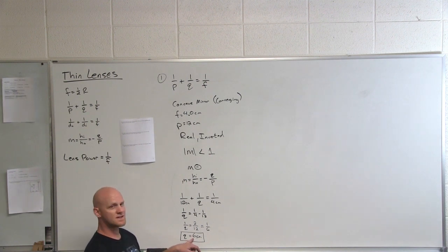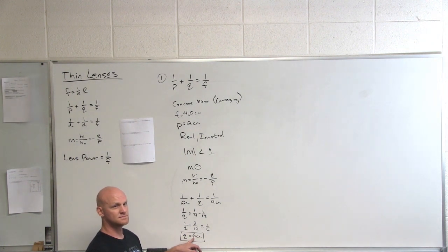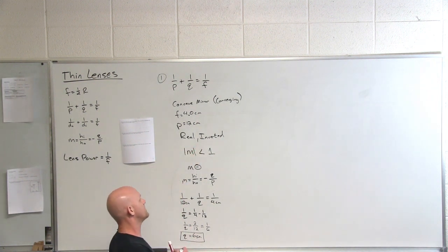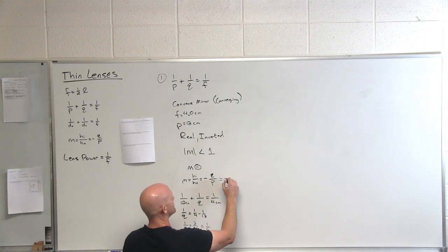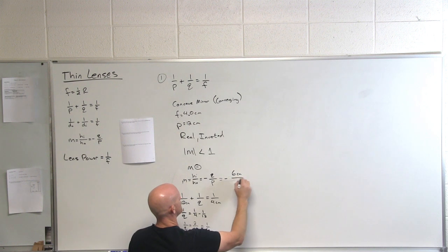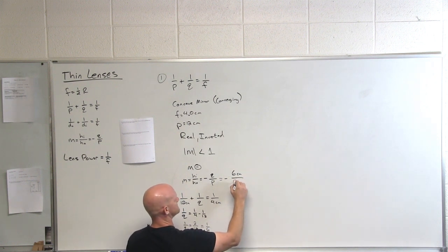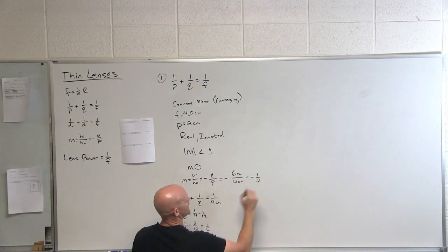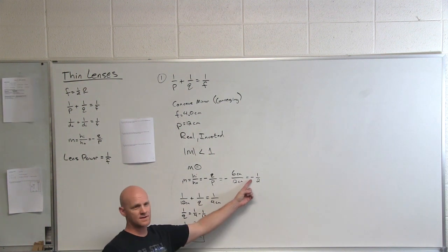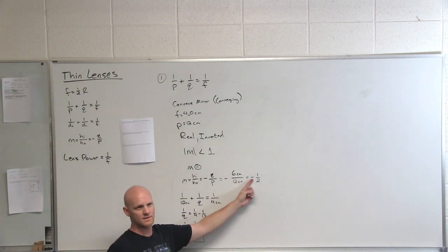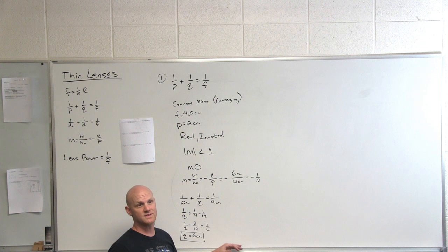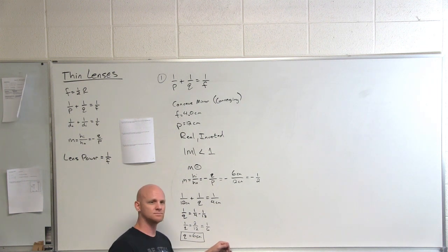With our image distance being 6 centimeters — positive — that confirms it is a real image. Being real makes it inverted. Now let's do our magnification equation: negative Q over P, which is negative 6 centimeters over 12 centimeters. We get negative one-half. The negative sign means it's inverted, and the absolute value being less than 1 means the image is smaller — in this case, only half as big as the original object.